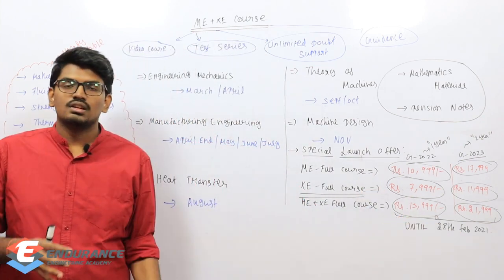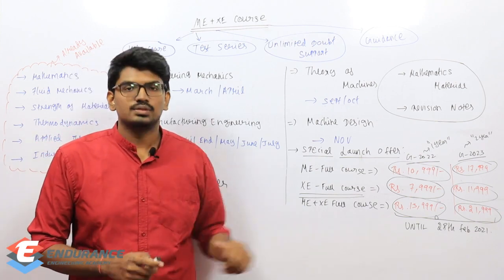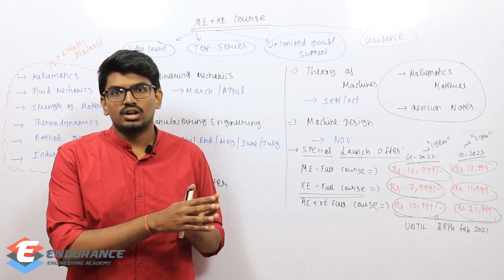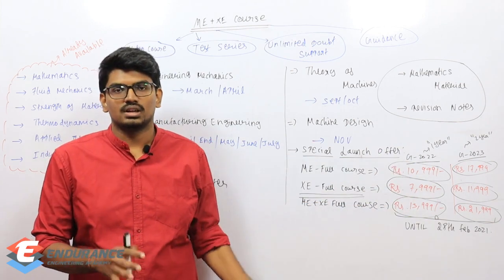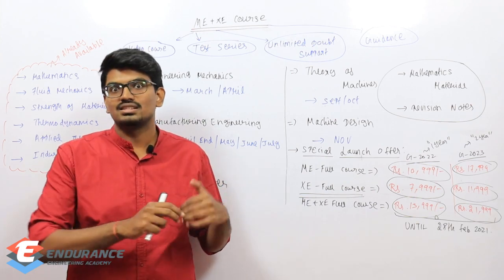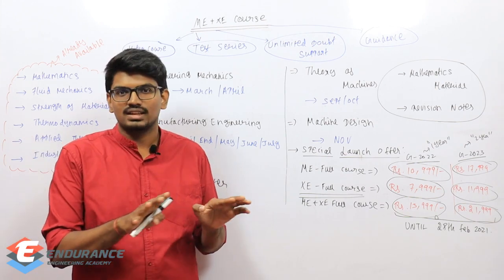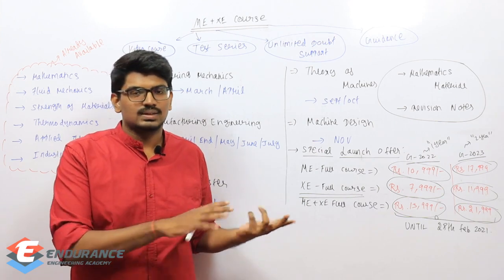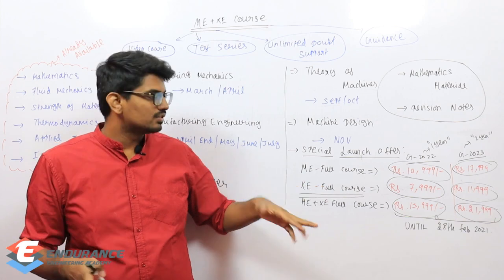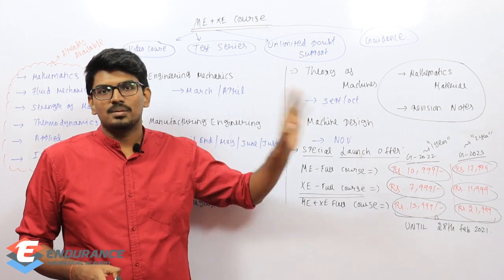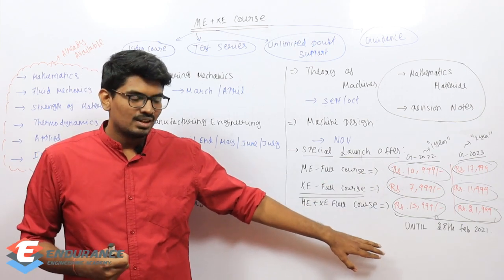Regarding installment options — available until 28th February — if you cannot pay the full fee at once, you can pay in two installments with no additional interest. For example, an ₹11,000 course can be split into two payments of ₹5,500: one at registration and one after one month. Similarly, other course fees can be split into two equal parts. No extra bank charges or additional fees apply.